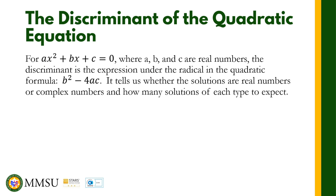For ax squared plus bx plus c equals zero, where a, b, and c are real numbers, the discriminant is the expression under the radical in the quadratic formula: b squared minus 4ac. It tells us whether the solutions are real numbers or complex numbers, and how many solutions of each type to expect.